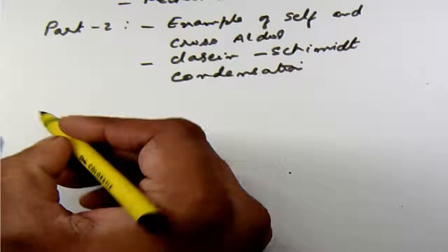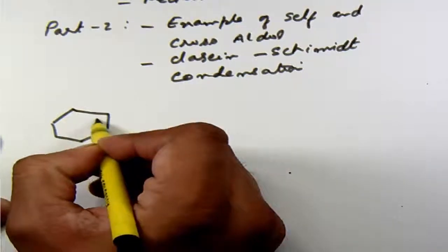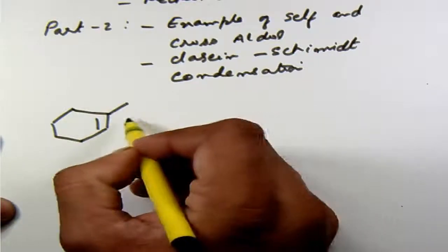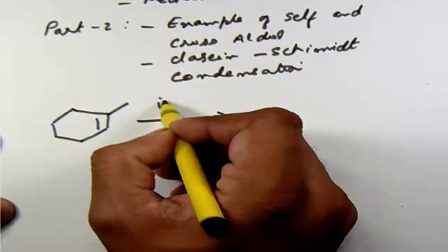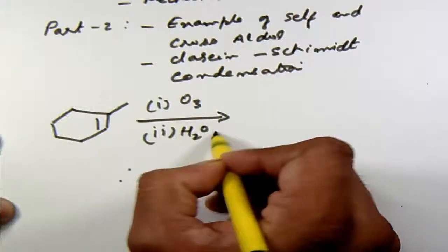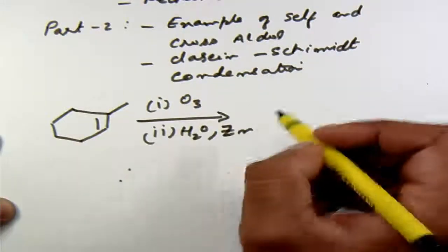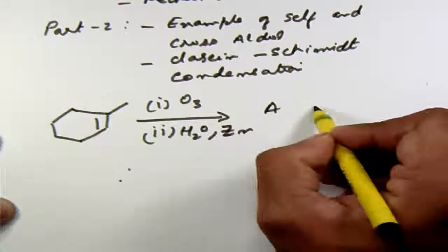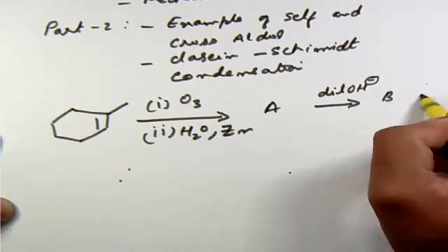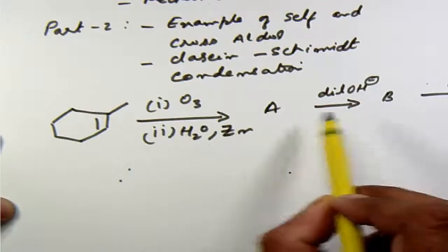So let's take a reaction sequence. I have 1-methyl cyclohexene and I first do ozonolysis then hydrolysis in the presence of zinc which is known as reductive hydrolysis. So the overall reaction is called reductive ozonolysis and I get some product A and we treat this product with dilute base to get B to get C.